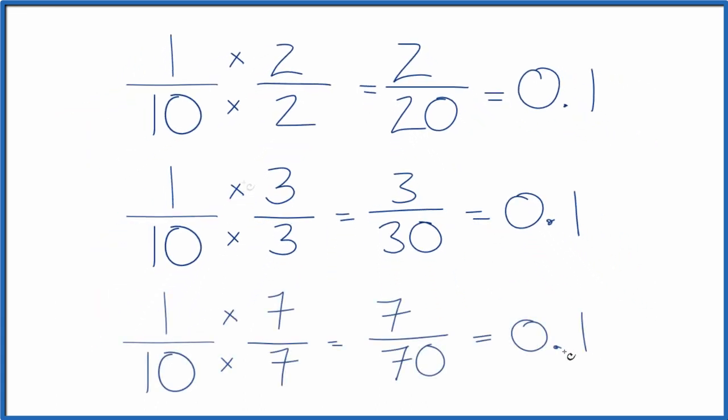One last one. If we multiply by 7 over 7, again multiplying by 1, we get 7 70ths or 0.1, which is what we got before.